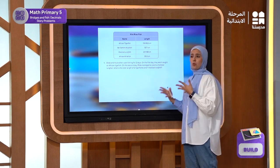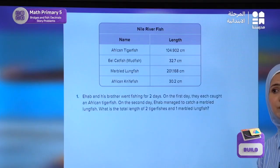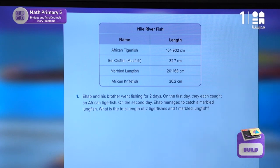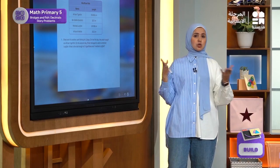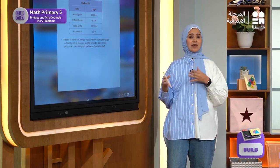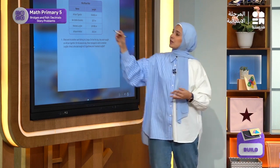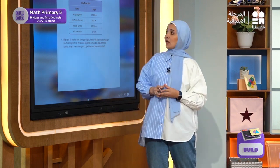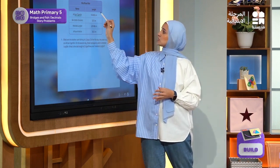How do I think and what do I do? The first step is to determine what the question is asking for. It's asking for the average length of the fish they caught in the two days. So the numbers that we will use to get the solution are the average length of the African tiger fish, which is this number.